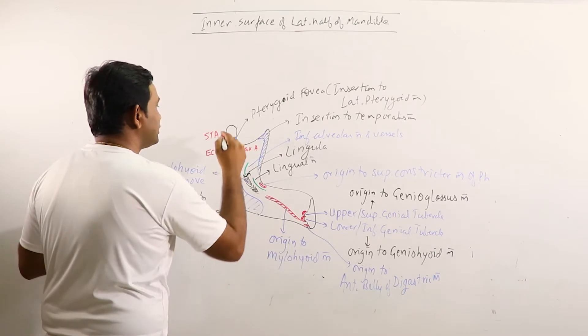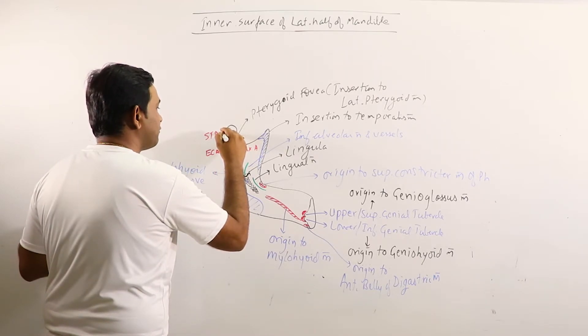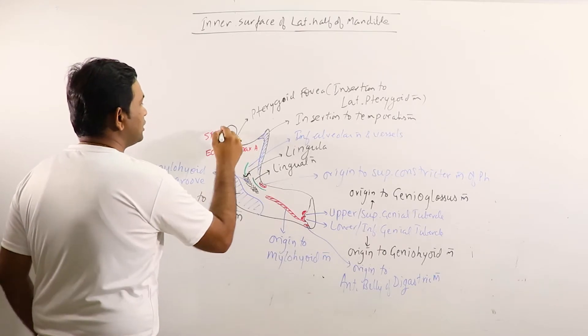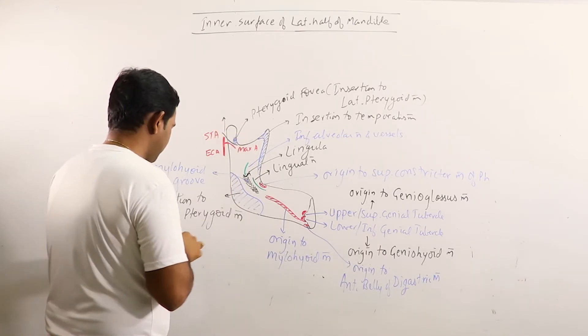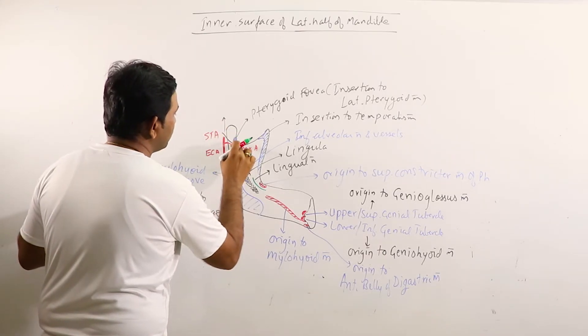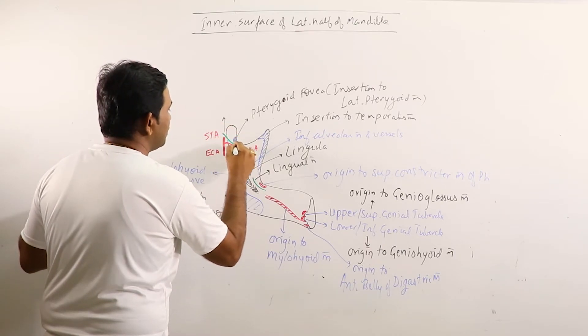Another nerve which can be observed on the medial surface of the neck of condyloid process is auriculotemporal nerve. This is auriculotemporal nerve.